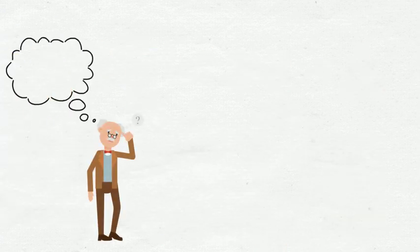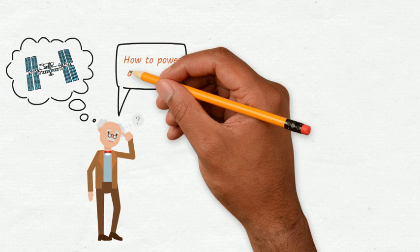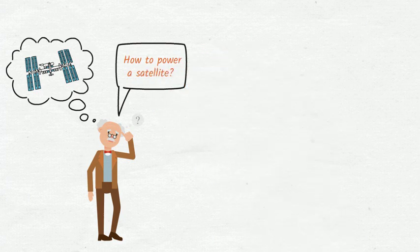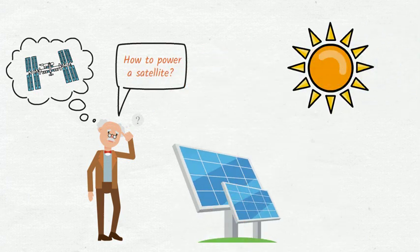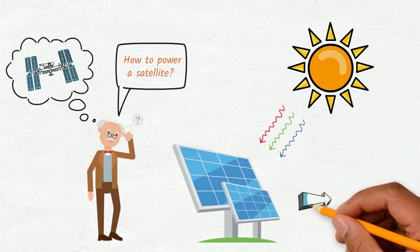One of the important questions we need to ask when developing a satellite is how do we power it? And the answer lies right above our heads, the Sun, by using solar cells to convert the sunlight into electricity.